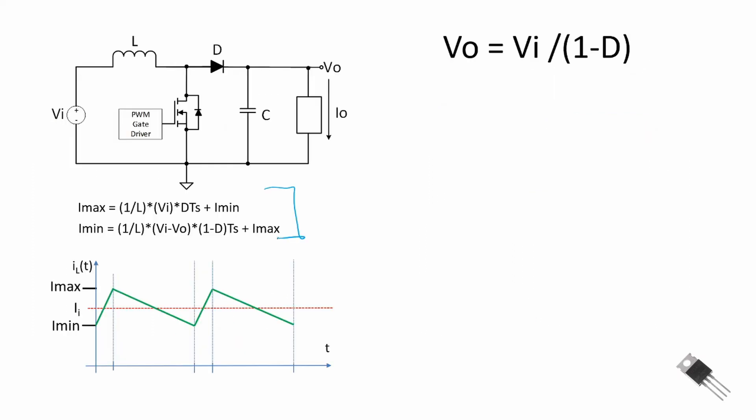Using the equations for the current through the inductor, we can derive the input-output voltage relationship: V_out equals V_in divided by (1 − D), where D is the duty cycle of the low side switch.